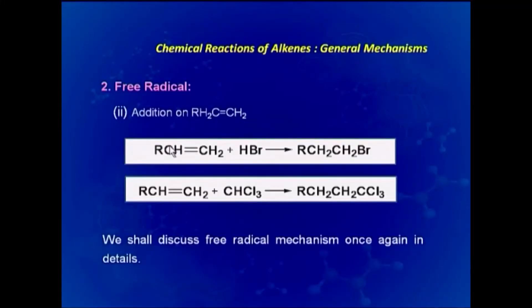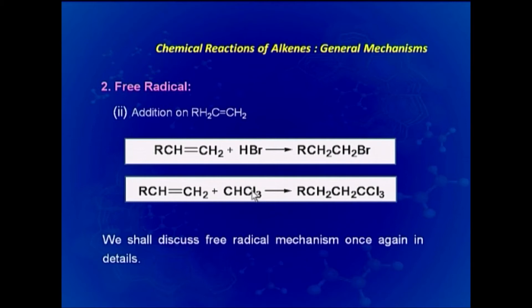For free radical addition on an unsymmetrical alkene where an R group is substituted — RCH=CH2 — with HBr the product would be RCH2–CH2Br. Similarly, addition of chloroform by free radical mechanism to RCH=CH2 leads to formation of RCH2–CH2–CCl3.